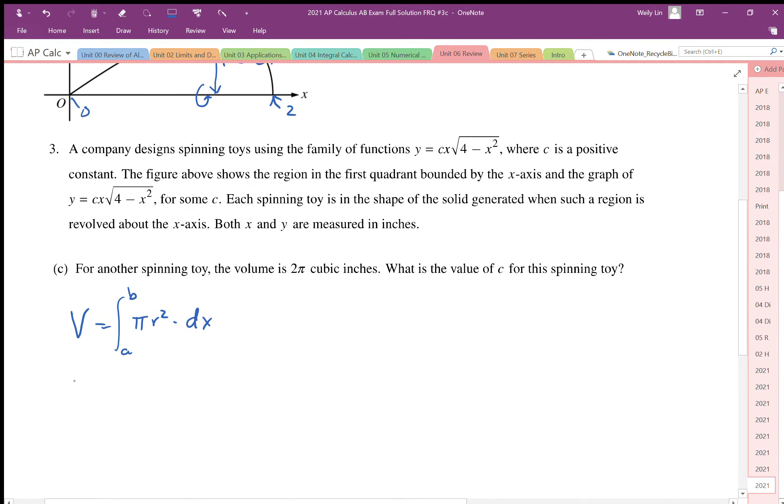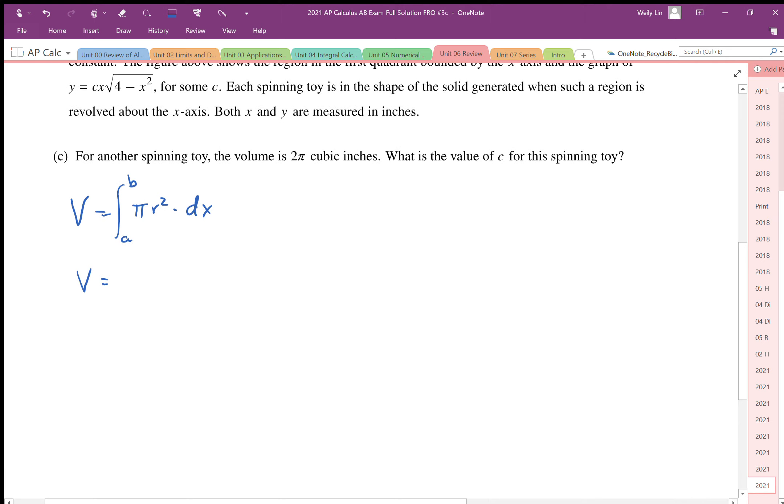So the volume of this spun object is going to be π times the integral from 0 to 2 of πr². So r² is going to be cx√(4 - x²) all squared, and give it some thickness dx.